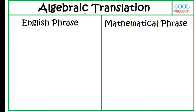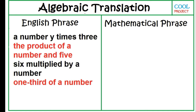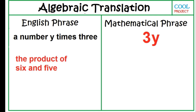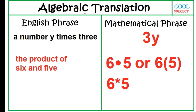Translate from English phrase to mathematical phrase. A number Y times 3. The product of a number and 5. 6 multiplied by a number. 1 third of a number. Note: instead of using the popular multiplication symbol, or a dot, or a parenthesis, in this case just put the number in front of the letter. The product of 6 and 5 can be translated using a dot between the numbers, or a parenthesis, or an asterisk.